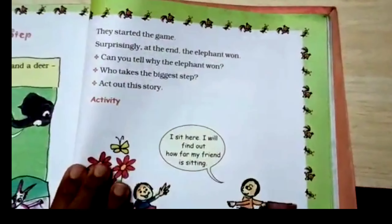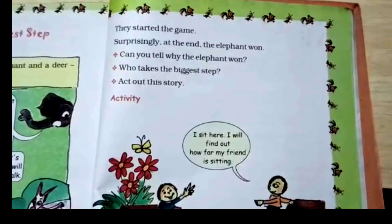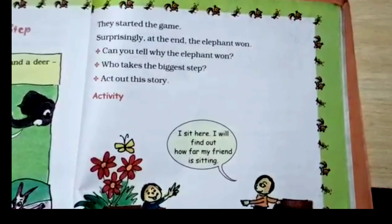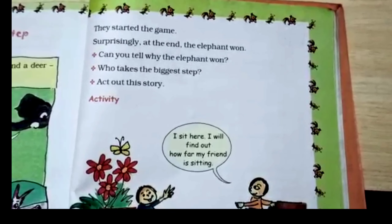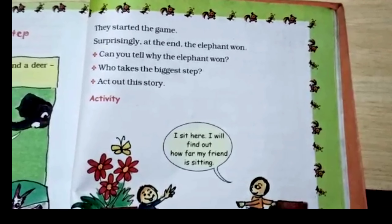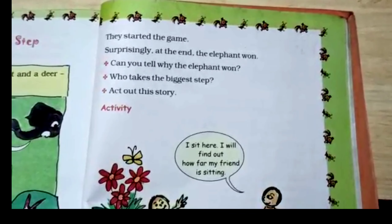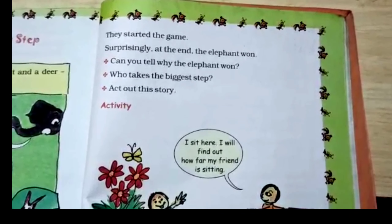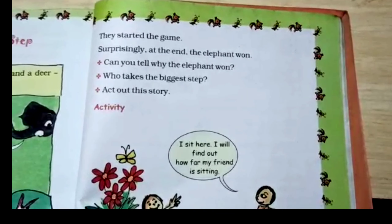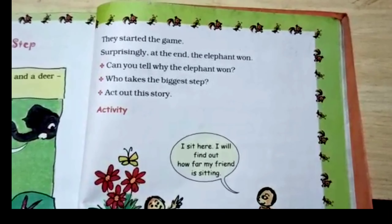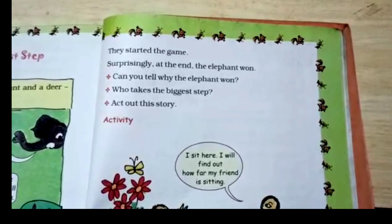Now come to the next page. The game has started and surprisingly, at the end of the game, the elephant won. Now think — can you tell me why the elephant won the race? He was moving very slowly, and yet he won the race at the end. Because the elephant has taken long steps — that's why he won the race.